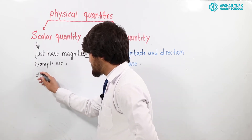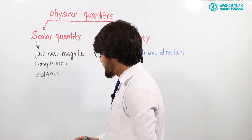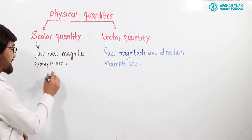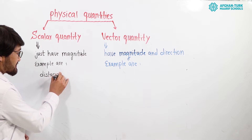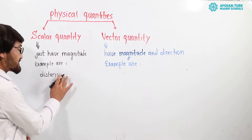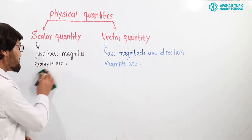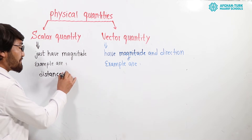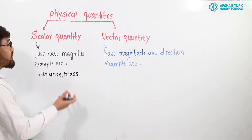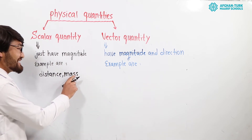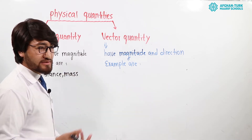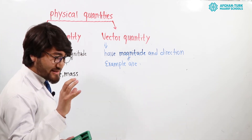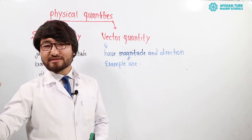For example, distance. Distance is a scalar quantity because we measure distance and it only has magnitude. Mass is also a scalar quantity because it has just magnitude. For example, if you go to a shop and say to the shopkeeper 'give me one kilo of sugar,' you do not give a direction — mass has magnitude but no direction.